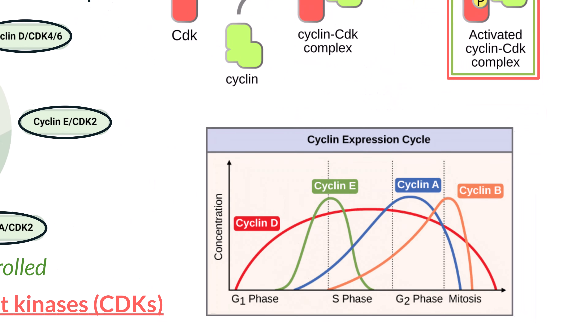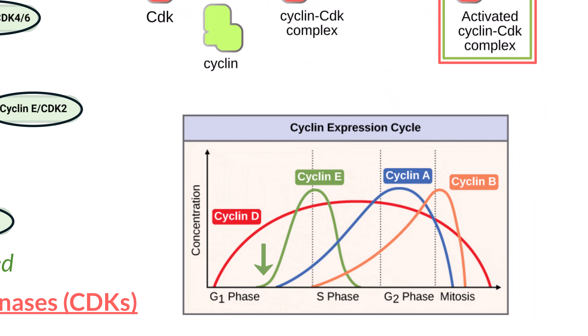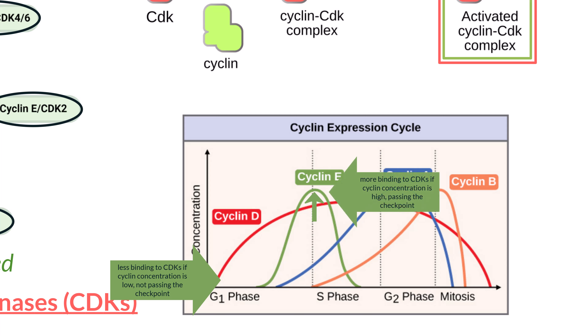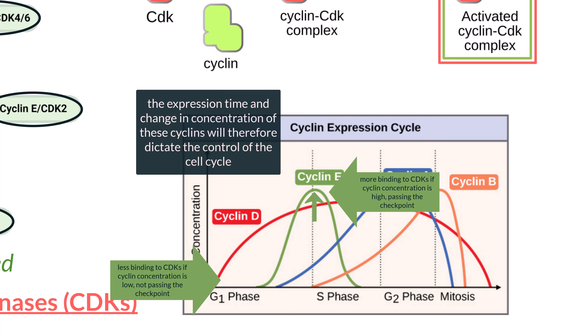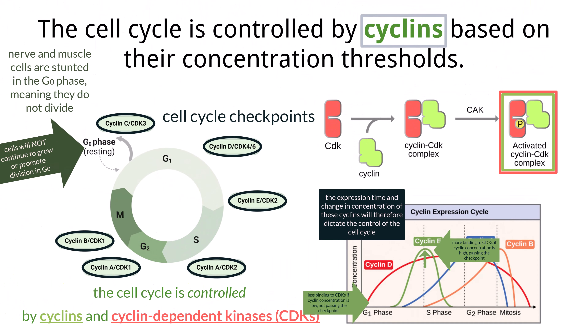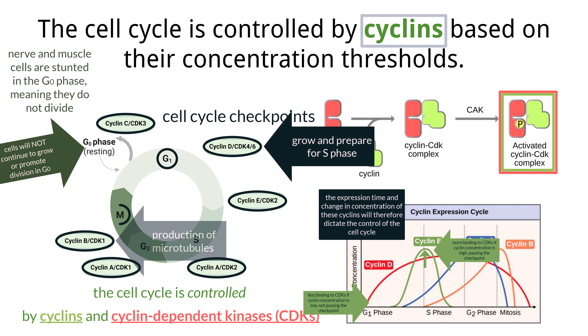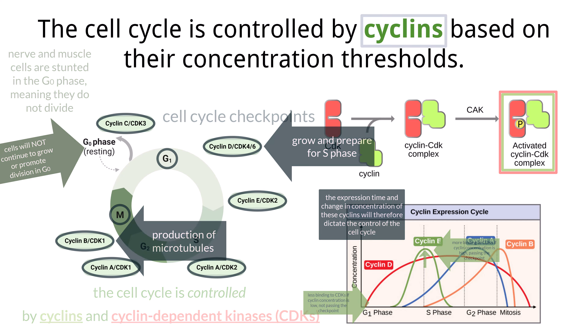Cyclin levels change during the cell cycle. When a certain cyclin level is low, there is less binding to CDKs and the checkpoint cannot be reached. In order for the cell to move to the next phase, a certain concentration of cyclin-CDK complexes must be present. G1 cyclins are the ones that tell the cell to grow and prepare for the S phase. Mitotic cyclins are responsible for the production of microtubules, which are necessary to produce spindle fibers.